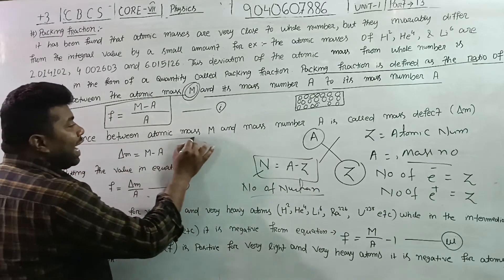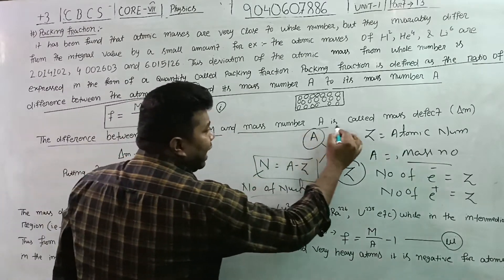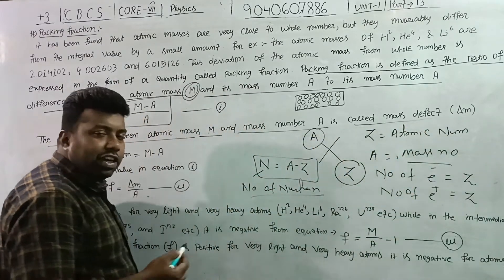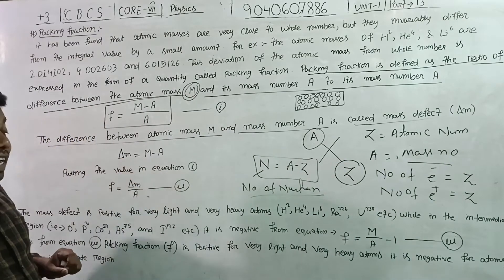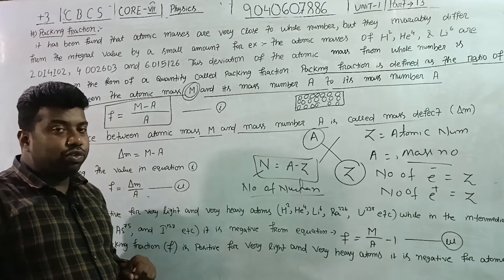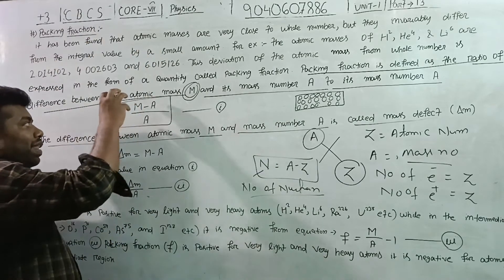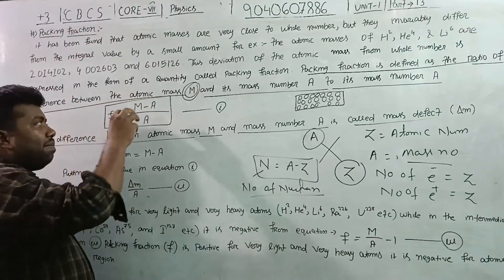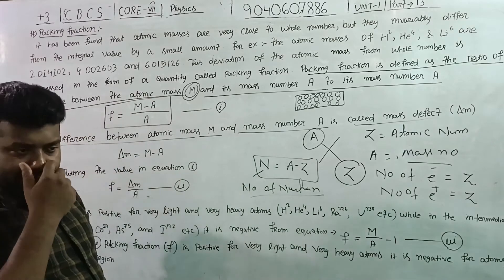The difference between atomic mass M and mass number A is called mass defect. The mass defect is equal to M minus A. If we write del M, then del M equals M minus A. To find M means A, capital M is the actual atomic mass.